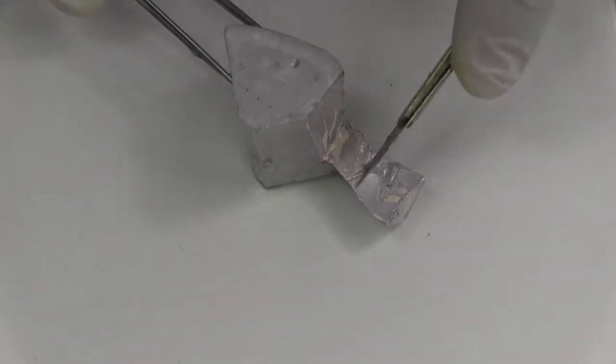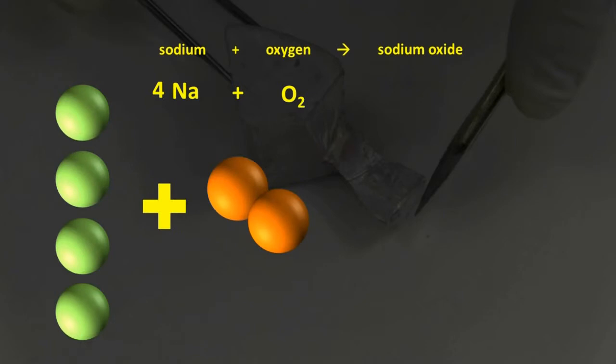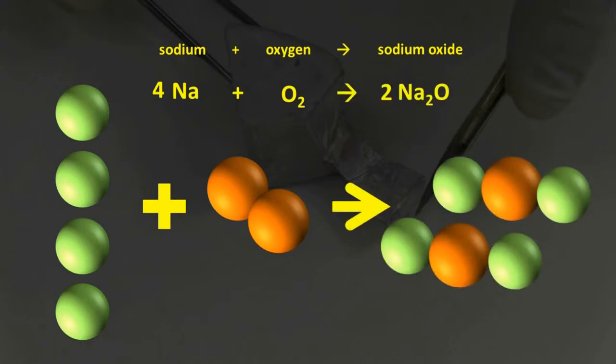The equation for sodium's chemical reaction with oxygen is, sodium plus oxygen produces sodium oxide. 4Na plus O2 produces 2Na2O.